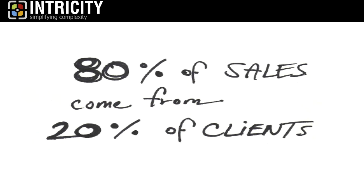The Pareto rule certainly holds true — we've seen it again and again. Whether it's 70% of sales coming from 20% of clients, or as in this example, 80% of sales coming from 20% of clients, the question is: who are those clients? A marketing manager once said he was certain 50% of his marketing dollars were being spent appropriately — he just wasn't sure which 50%. CLV is a mechanism that provides access to that accurate information.